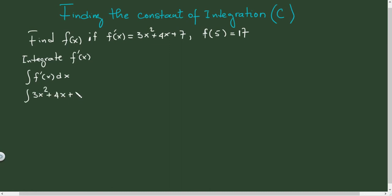The integral gives us 3·(x³/3) + 4·(x²/2) + 7x + C, where C is the constant of integration we're looking for.